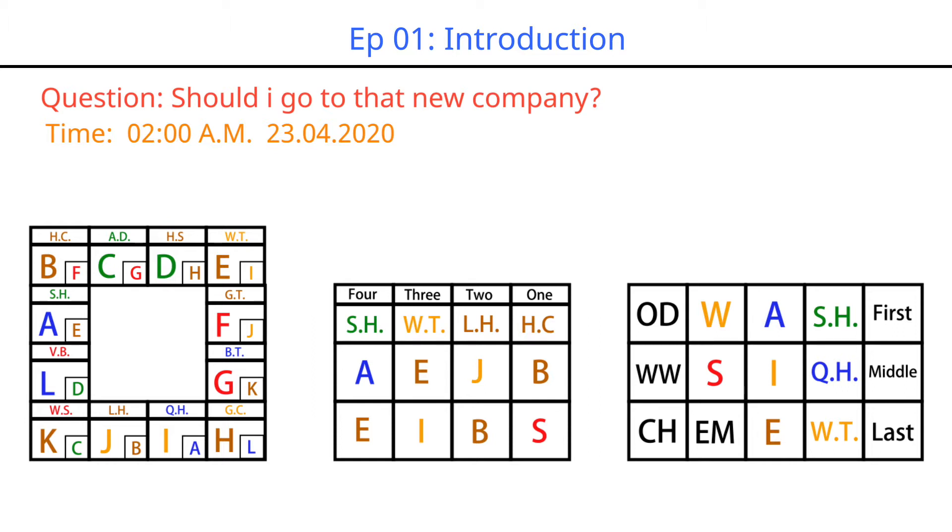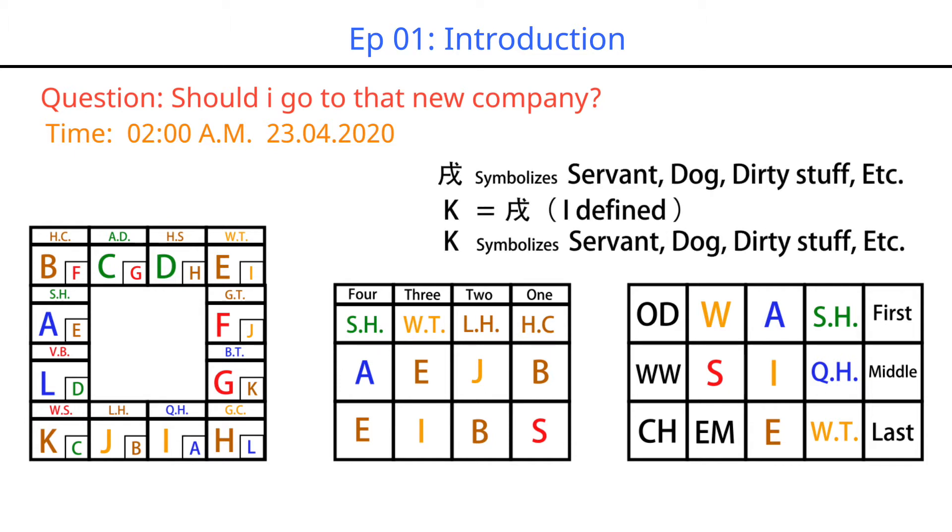Every time we want to use Da Liu Ren to predict something, we need to invoke a course on the phone with an app or a website. Then we will get a course like this, and the position of the symbol depends entirely on the time. That is to say, as time changes, the location of these symbols will be different. After invoking the course, let's analyze these symbols. In the following sharing, for your convenience, I will only speak the letters, not the Chinese characters replaced by the English letters. This rule will run through all the videos in this series.